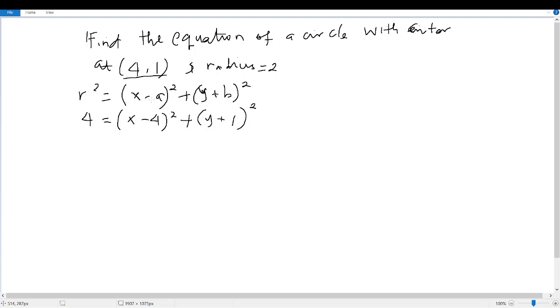Now the formula to find the equation of a circle is basically r² = (x - a)² + (y + b)². So 4 equals (x minus... so 4 is our a and 1 is our b, then we have the radius as 2.